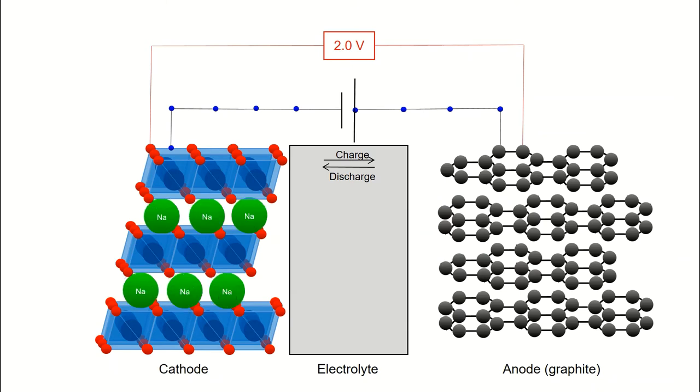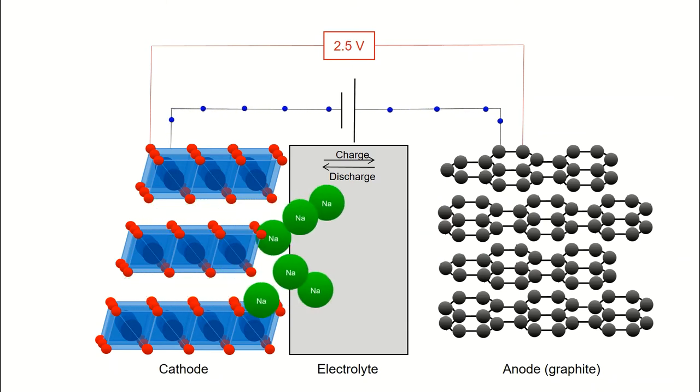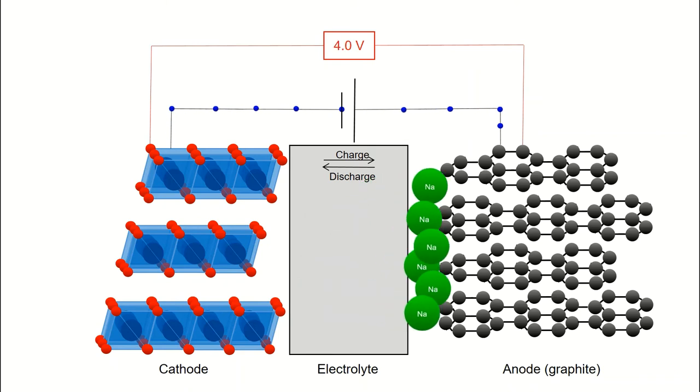When we instead use sodium, the larger ions do not go into the graphite structure. Therefore, we need another type of anode material. And this is really where I come in.